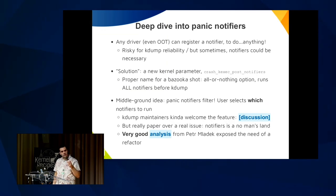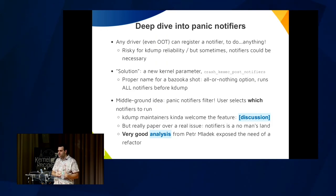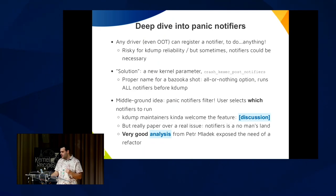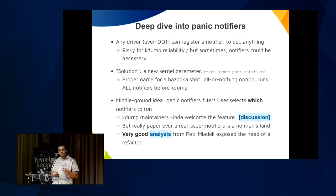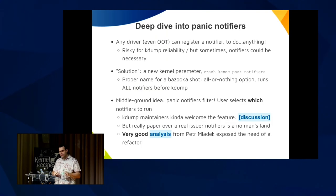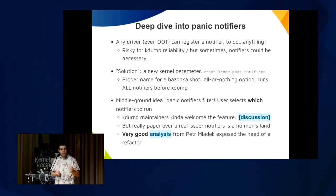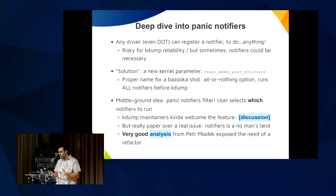The panic notifiers infrastructure is kind of a free-for-all — anybody can add a callback to run at panic time. It's risky for kdump reliability, but sometimes it could be necessary. There was a solution for that: a parameter called crash_kexec_post_notifiers. It's an all-or-nothing option — it runs all the notifiers before kdump. We didn't want to run all the notifiers, so we had a middle-ground idea: a filter where users can select which notifiers to run. The kdump maintainers liked this feature, but honestly it was papering over a real issue — panic notifiers is a no man's land.